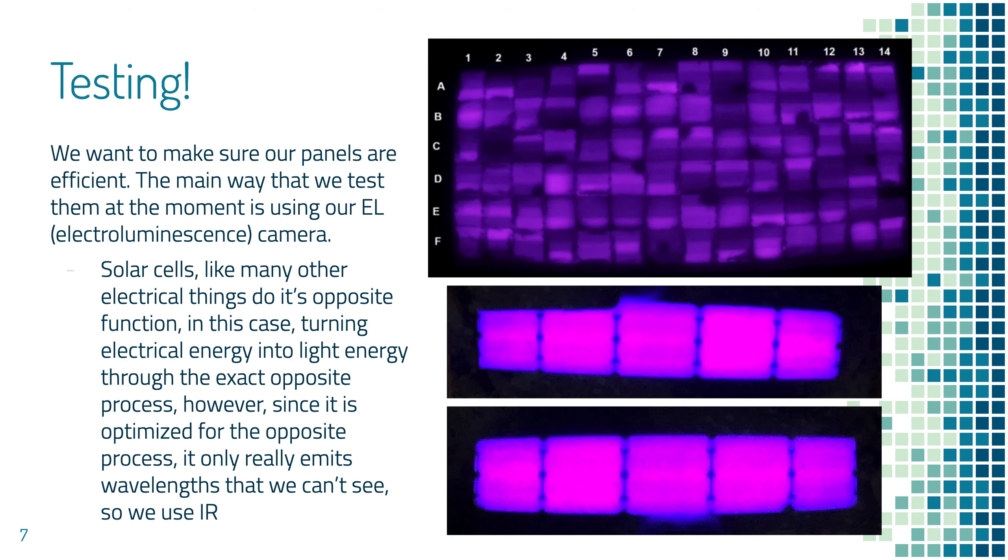Then after we've done this, we move on to testing them. We don't have a way of testing for their exact power output before we actually have them done, but we have ways of trying to predict that and seeing defects that we can fix. So we use electroluminescence testing using an electroluminescence camera that we built. Solar cells, like any other electrical thing, can do its opposite function. So it can turn electrical energy back into light, just like an LED. When you put power through the solar panel, it actually lights up, just not in wavelengths that we can see. But with our electroluminescence camera, we can see in infrared, and that's the wavelength that our solar panels emit.